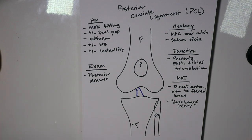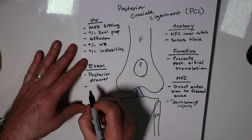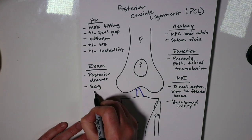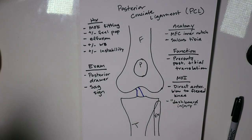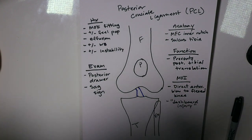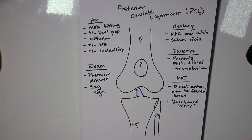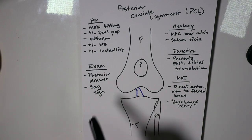The other test is the SAG sign. The patient is lying supine; you passively bring both hips to 90 degrees with knees flexed to 90 degrees, supporting under the lower calves near the ankles. You look straight across at the tibial tubercles of both knees. If the injured knee's tibial tubercle rests lower or further posterior than the unaffected knee, that is an indicator that the PCL is injured and there is posterior instability. So the exam findings are the posterior drawer and the SAG sign.